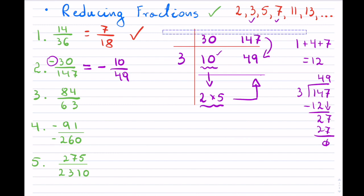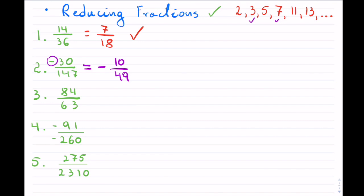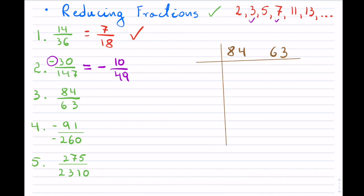Now let's look at the third example: 84 over 63. This is an improper fraction because 84 is bigger. As before, I only check the smaller number first in terms of its primes, which is 63. 2 will not go into 63, so I will check 3.